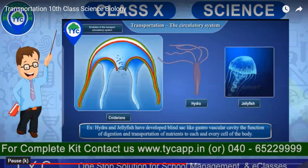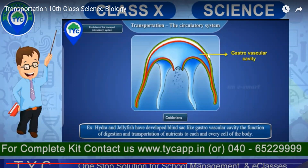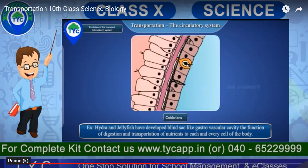Cilia also help in the proper distribution of nutrients. In hydra and jellyfish, they have developed blind sac-like gastrovascular cavities. These gastrovascular cavities function for both the digestion and transportation of nutrients. You can see a very clear, well-defined gastrovascular cavity in organisms like jellyfish and hydra, and its function is to distribute nutrients properly to all parts of the body through protoplasm.